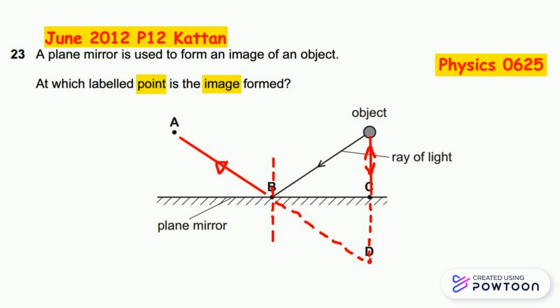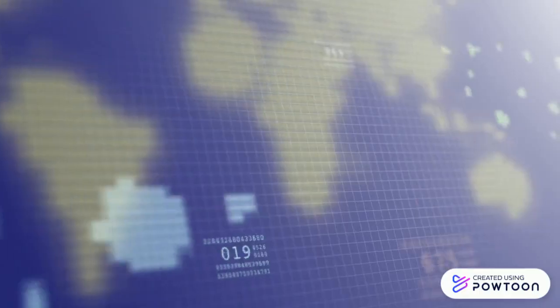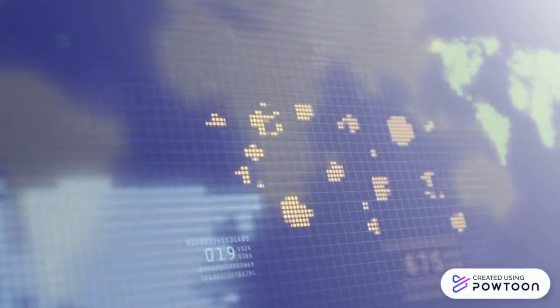To ensure that D is the correct answer, use a ruler to measure the distance between the object position and point C on the plane mirror as distance object, which must be equal to the distance between point C on the plane mirror and position D as image distance.